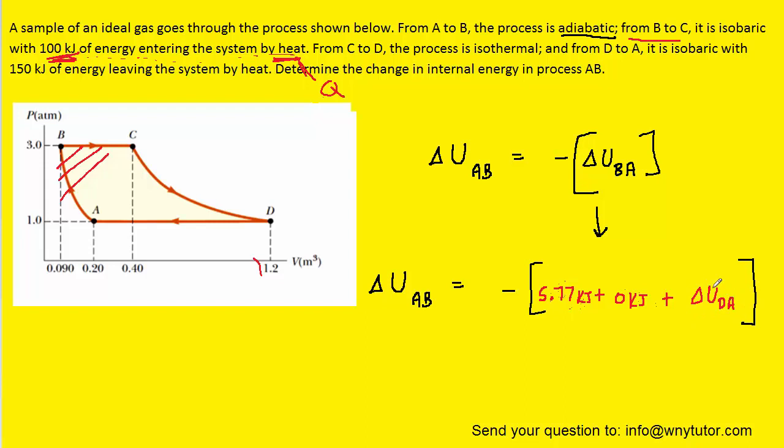And then finally, we want to look at the change in internal energy moving from D to A. Once again, that change in internal energy is equal to the heat plus the work. And the question notes that 150 kilojoules of energy is leaving the system by heat. So that actually means that Q is negative 150 kilojoules. Negative, of course, because the energy is leaving the system.